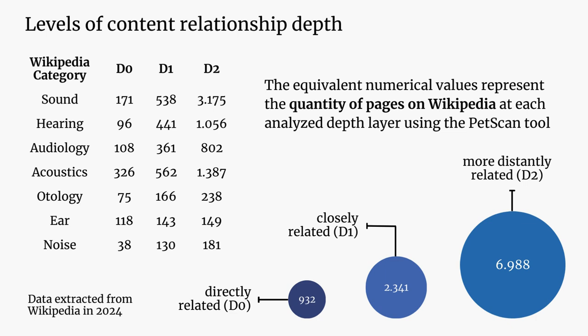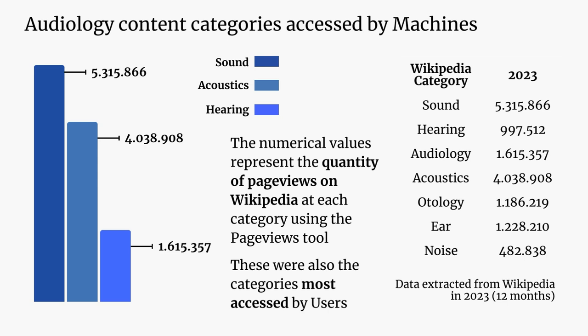The numerical values represent the quantity of pages on Wikipedia at each analyzed depth layer using the PageViews tool. More than 6,000 articles on the English Wikipedia have some thematic relation with the analyzed categories, and these categories together total more than 900 articles. Regarding page views, the most accessed categories were sound, acoustic, and hearing, which are also the categories most accessed by users.